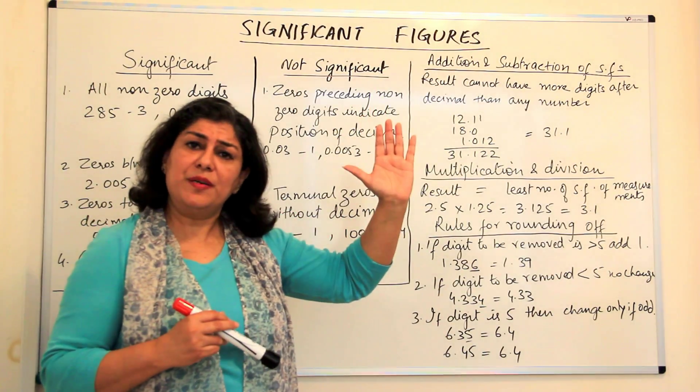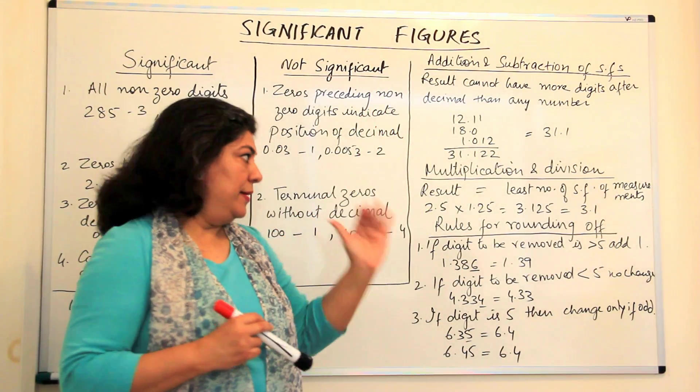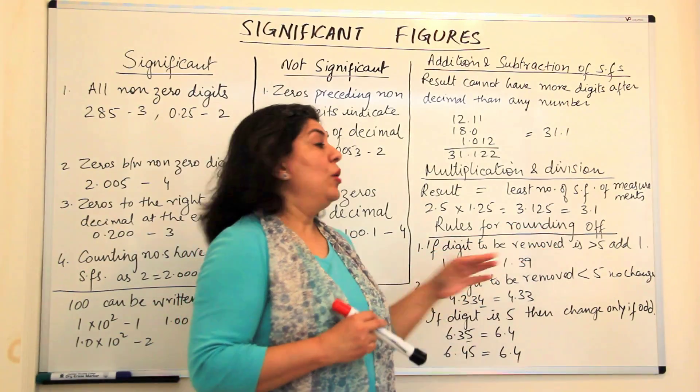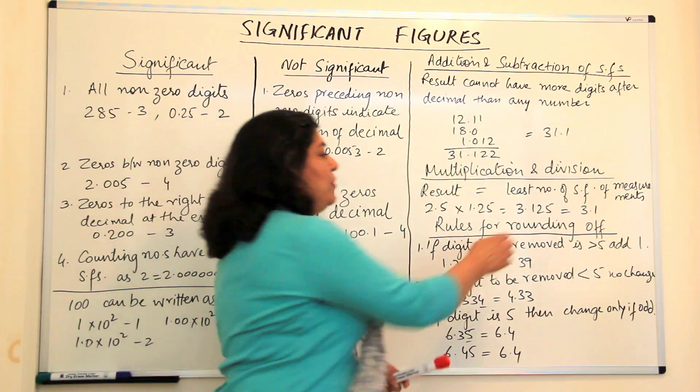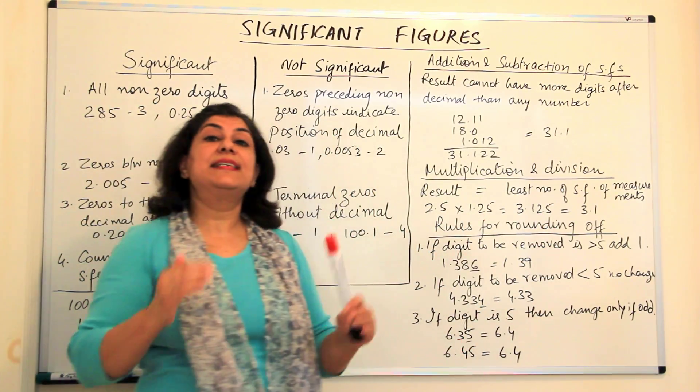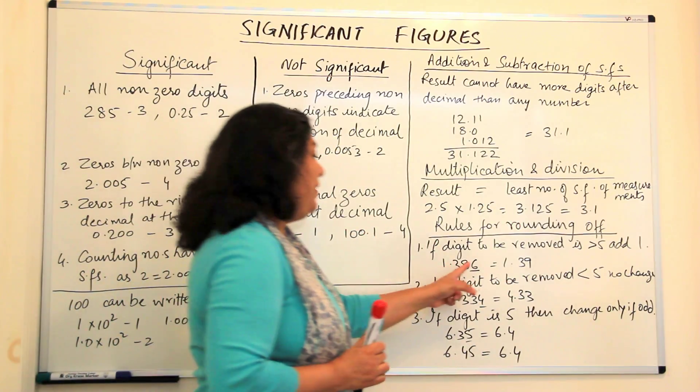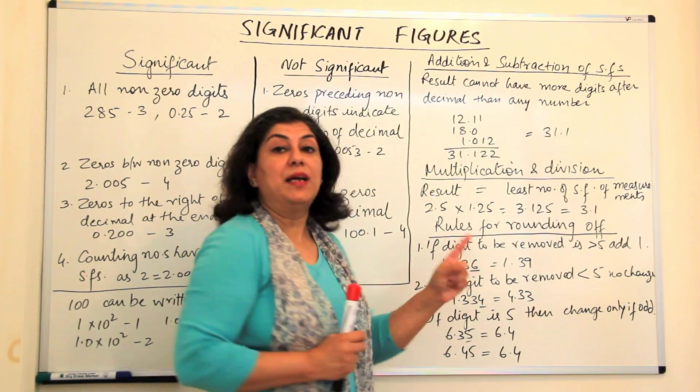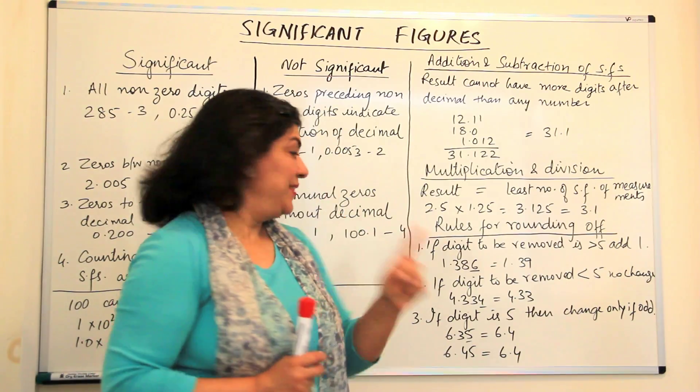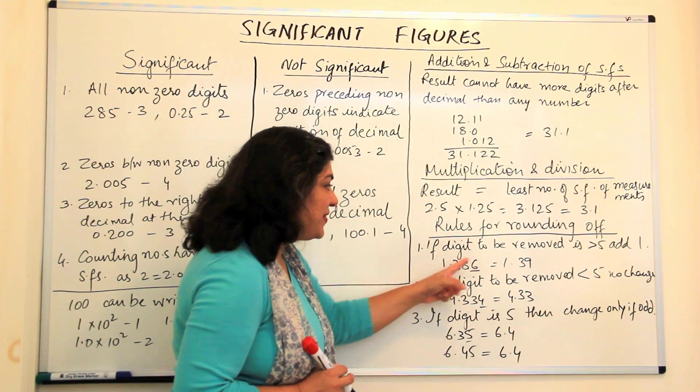Do we just drop off the numbers or are there some rules? There are rules in rounding off. What are these rules? If the number which has to be dropped is greater than 5, then we have to increase the preceding number by 1.